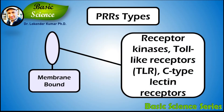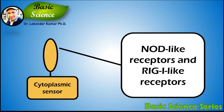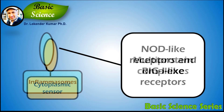Membrane bound sensors include receptor kinases, toll-like receptors, and C-type lectin receptors. Cytoplasmic PRRs include NOD-like receptors and RIG-like receptors.